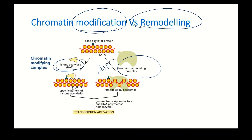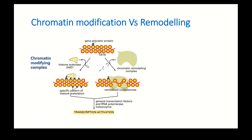Histone acetylase is the enzyme that causes acetylation of the epsilon amino group of lysine of core histones. Acetylation of histone leads to chromatin remodeling — certain proteins recognize the acetylated lysine residues and recruit other proteins that physically move the nucleosome from one place to another. This chromatin modification is an epigenetic change.